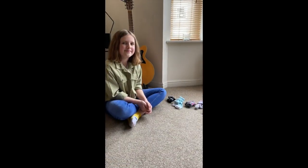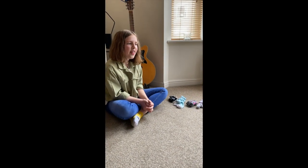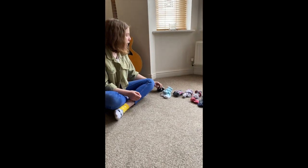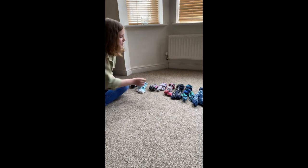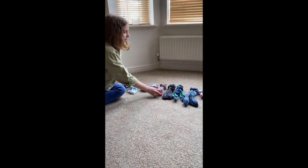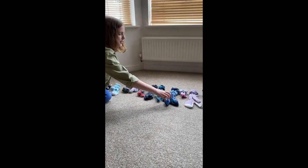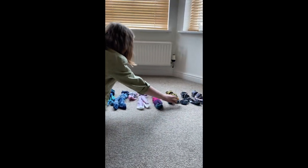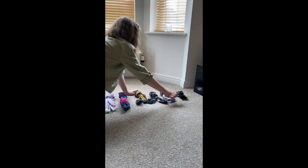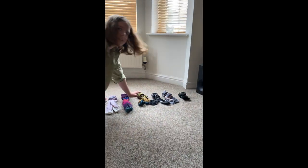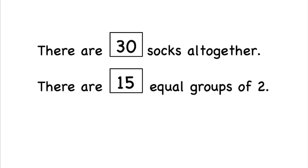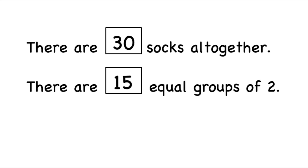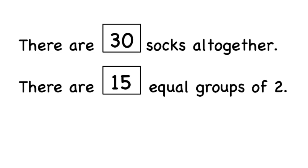Okay, so how many socks do we have all together? 30. How many equal groups do we have? 1, 2, 3, 4, 5, 6, 7, 8, 9, 10, 11, 12, 13, 14, 15. We have 15. So there are 30 socks all together and there are 15 equal groups of 2.